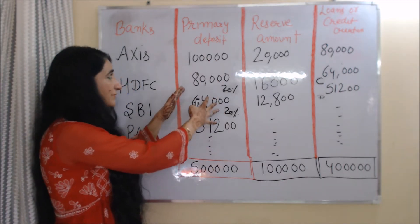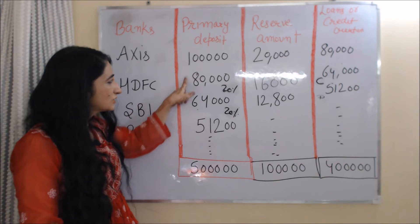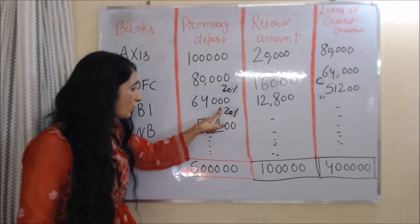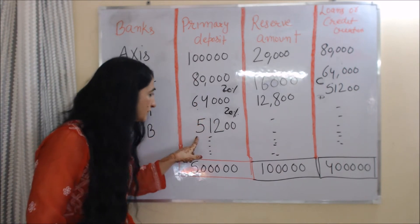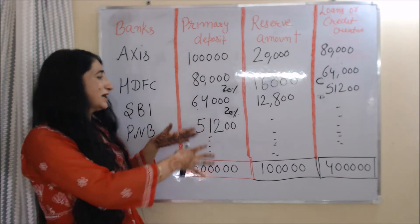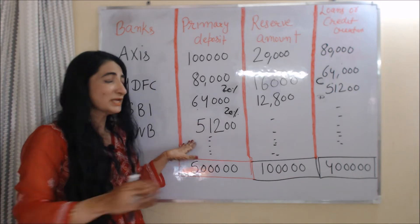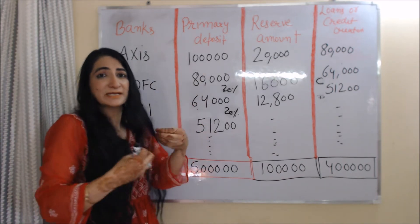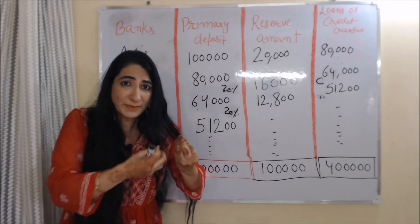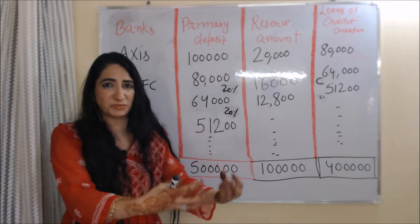You can see that the primary deposits are continuously falling: 1 lakh to 80,000, 80,000 to 64,000, 64,000 to 51,200, and this process continues until the primary deposit becomes almost zero. These primary deposits are basically liabilities of the banks, because banks have to return this amount to their customers.